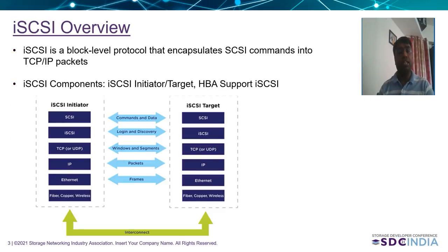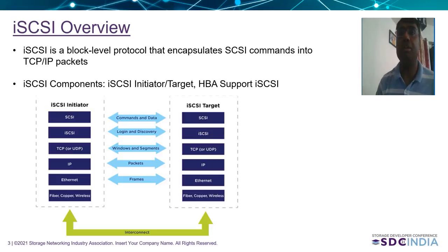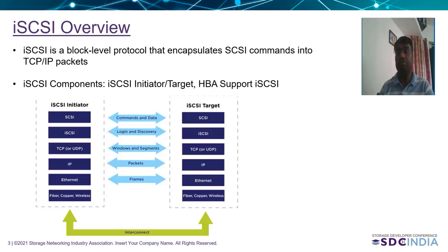This slide talks about the basics of iSCSI — the different functionality and components involved. At a very high level, iSCSI is a block-level protocol which encapsulates the SCSI command — the IO command or the config command — over a traditional TCP/IP frame or interconnect. At a broad level, it involves two main components: the iSCSI initiator and a target. The initiator is where the application is hosted requiring access to backend disks, and the iSCSI target is where the backend disks are connected.